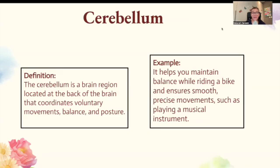Cerebellum. The cerebellum is a brain region located at the back of the brain that coordinates voluntary movements, balance, and posture. It helps you maintain balance — for example, when riding a bike — and ensures smooth, precise movements, such as when playing a musical instrument.